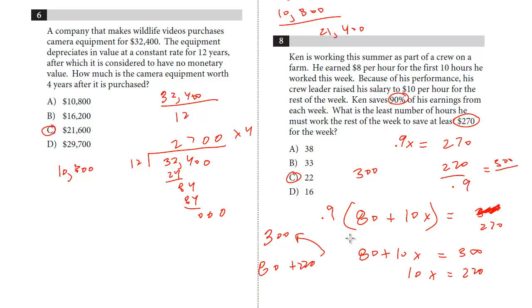But these types of questions, you just have to be pretty proficient at understanding percentages. And this is the equation, but just realizing that you're working backwards with a percentage. We know he has to save 300. So 270 we divide by 0.9 and that will give us that ending result.